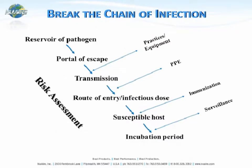When looking at the chain of infection, the reservoir is the habitat where the agent normally lives, and the portal of escape is the path by which the pathogen leaves the host. Transmission can be direct through contact, or indirect via airborne routes — practices and equipment are used to guard against that. The portal of entry is the manner in which the pathogen enters the susceptible host, and we guard against that by using PPE.